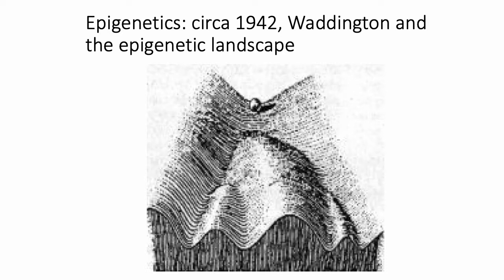Different environmental interactions might push the marble down one side or another of the valley. When a cell or marble hits these bifurcations, that corresponds to the cell making a decision about one particular cell fate or another. The marble might hit multiple bifurcations before reaching the end of the valley. Once the marble hits the bottom, it has made its final decision about cell fate and that decision is essentially irreversible.